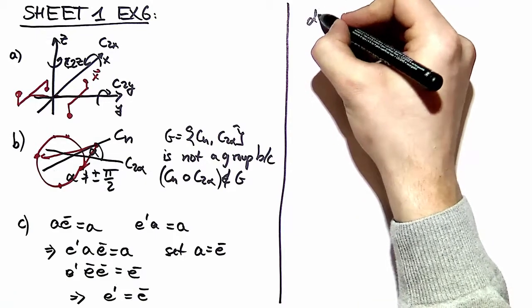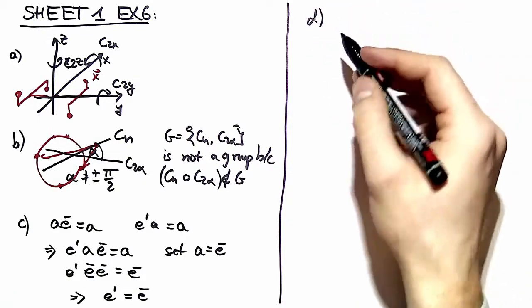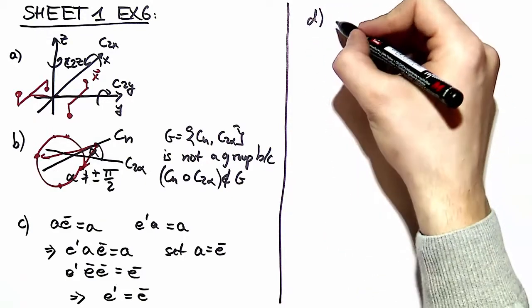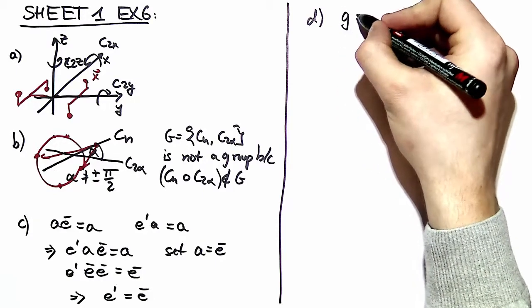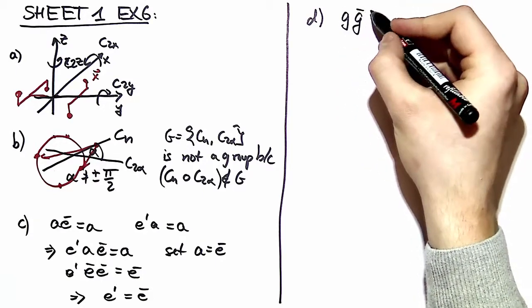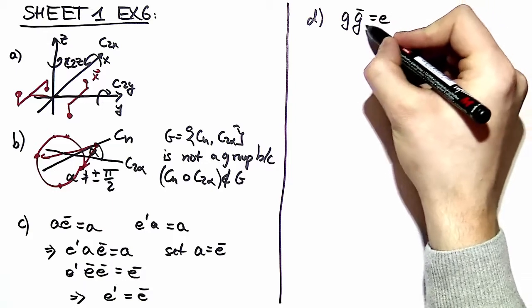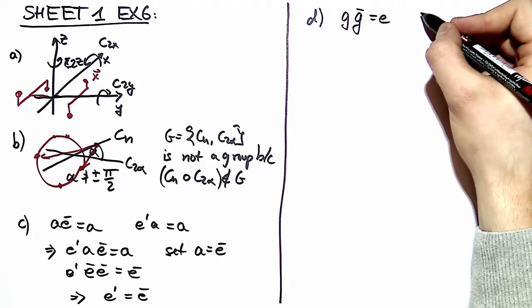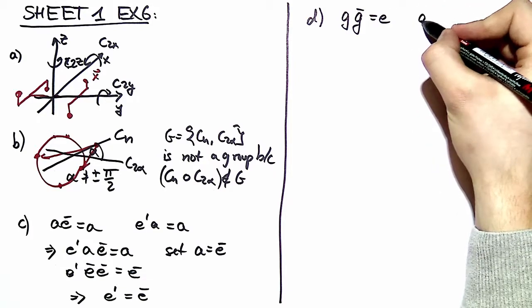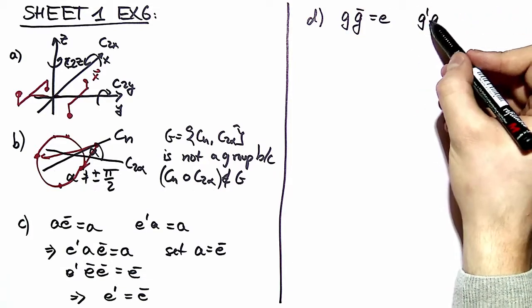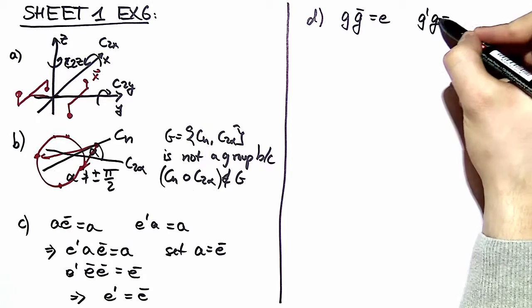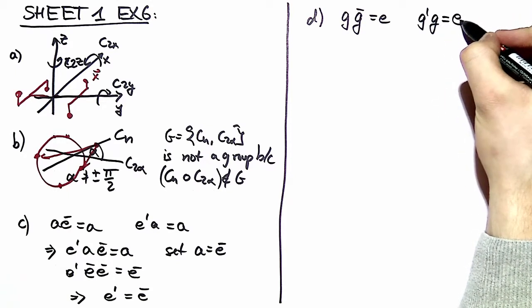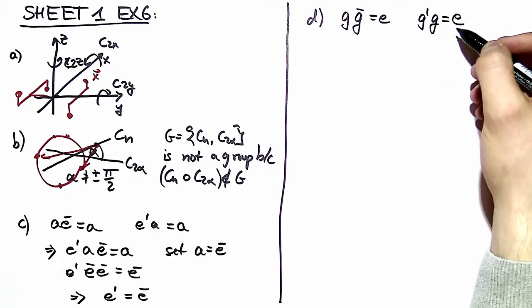In part D we take a look at the left and the right inverse. If we have a group element g and we take the right inverse, we right multiply g bar and arrive at the identity element. Or if we take the left inverse g prime and left multiply it with g, we arrive at the identity element.